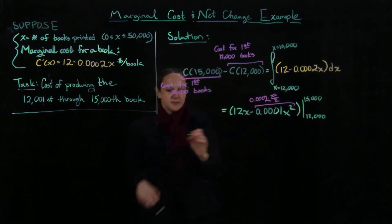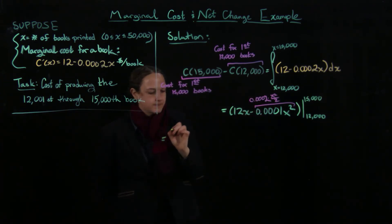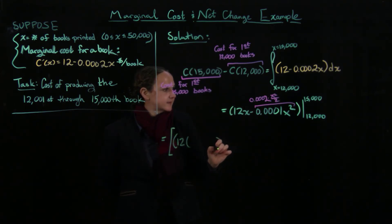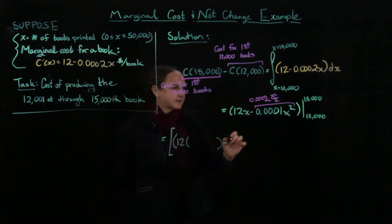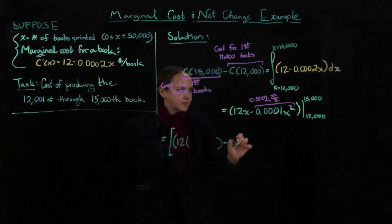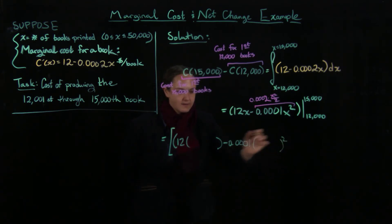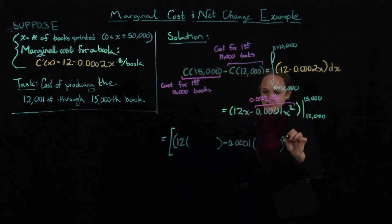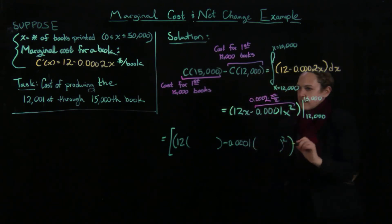And then I can put these guys in, so I'm going to get that this is equal to 12 times 15,000 minus 0.001 times 15,000 squared. So this is for the first time, and then I have to do this again.